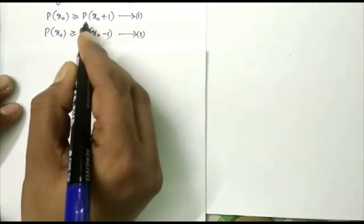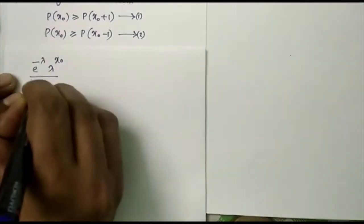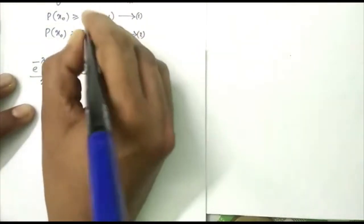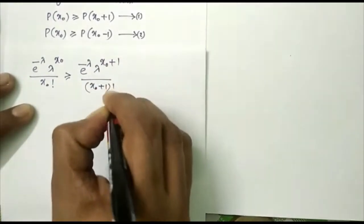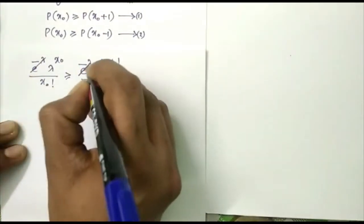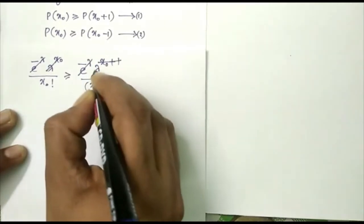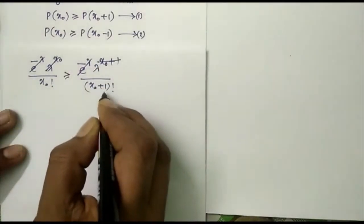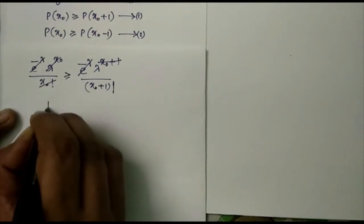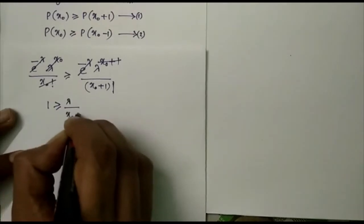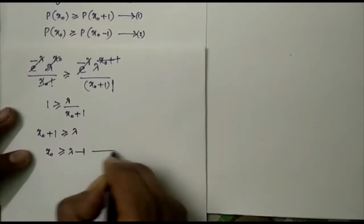Taking the first equation, P(x0) ≥ P(x0 + 1): we have e^(−λ) · λ^(x0) / x0! ≥ e^(−λ) · λ^(x0+1) / (x0+1)!. Cancelling e^(−λ) on both sides and simplifying, we get 1 ≥ λ/(x0+1), or x0+1 ≥ λ, which gives x0 ≥ λ − 1. This is equation 3.